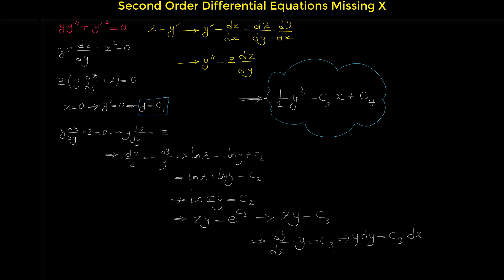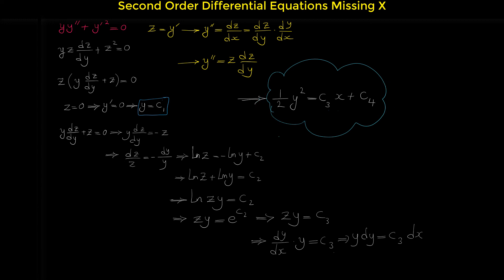Note that if we suppose c2 equals zero in the previous solution, this answer includes the first answer y = c1 as a special case. So y²/2 = c3·x + c4 is the general solution of this second order differential equation. I hope by watching this video you have learned how to solve second order differential equations missing the x. If you like this video, please subscribe to my channel.